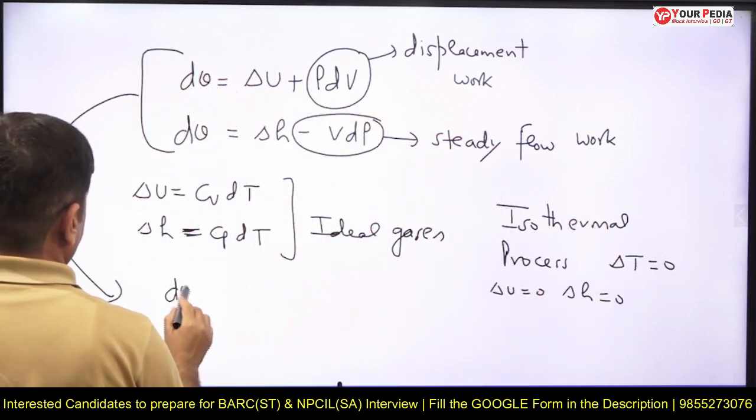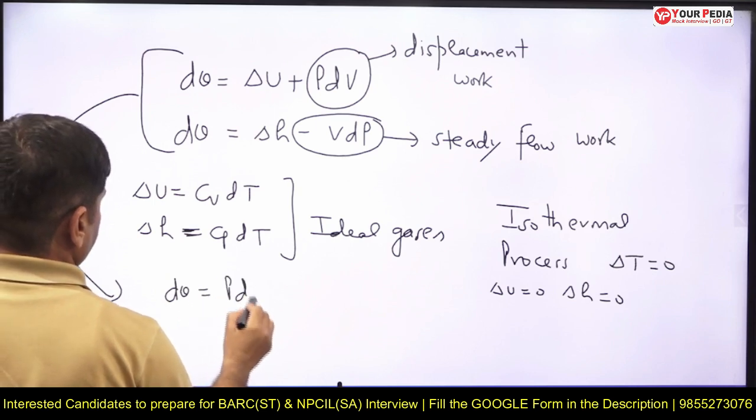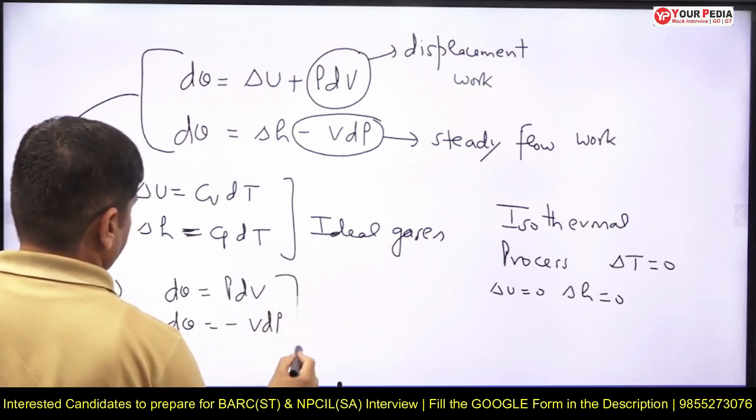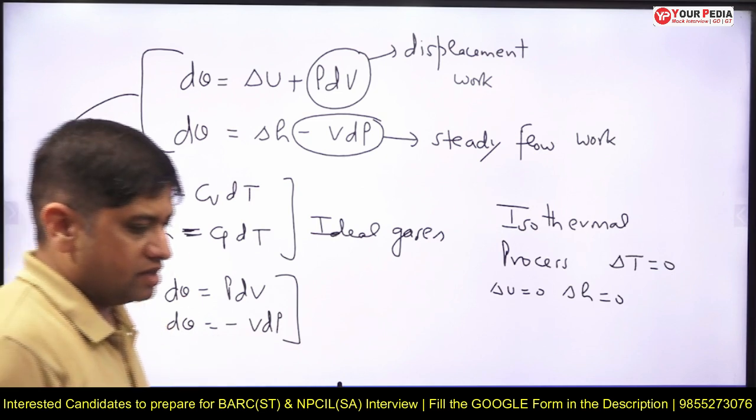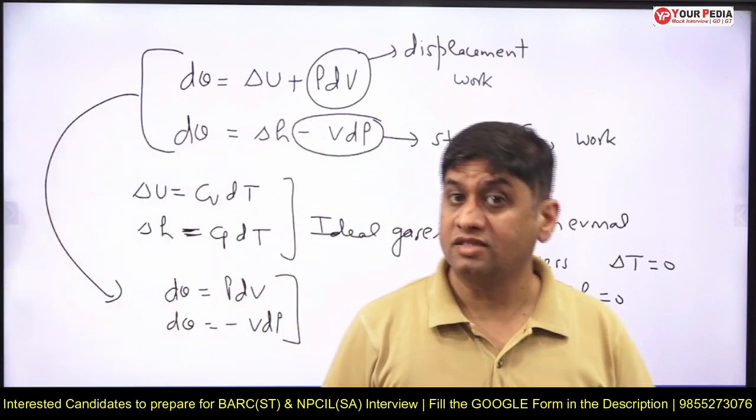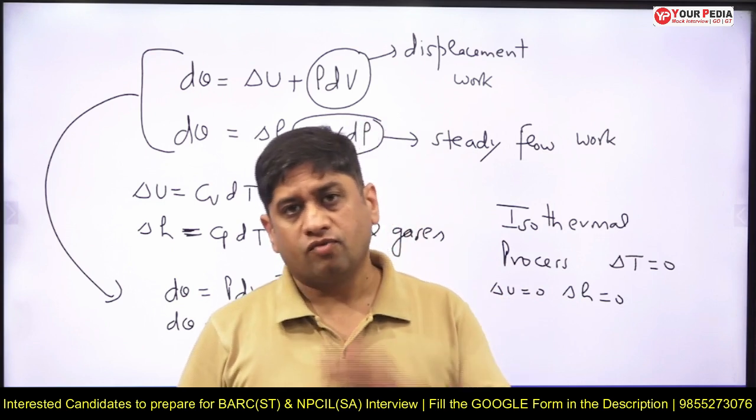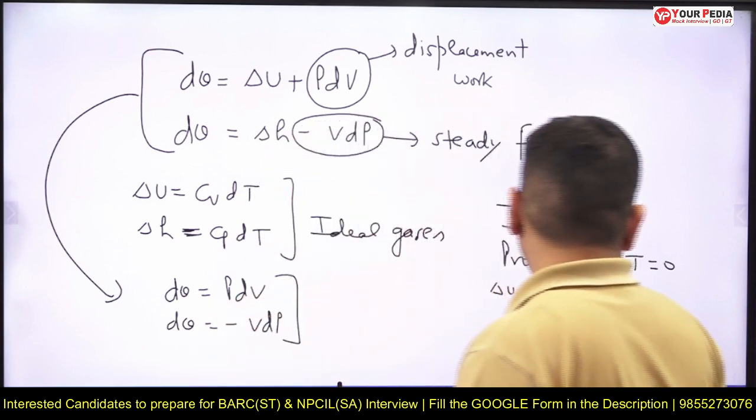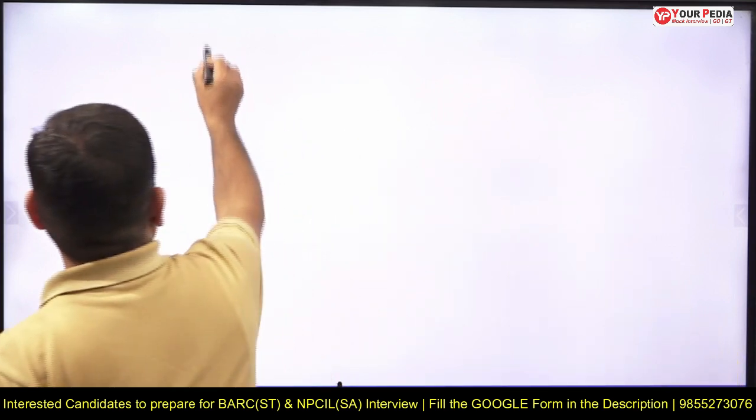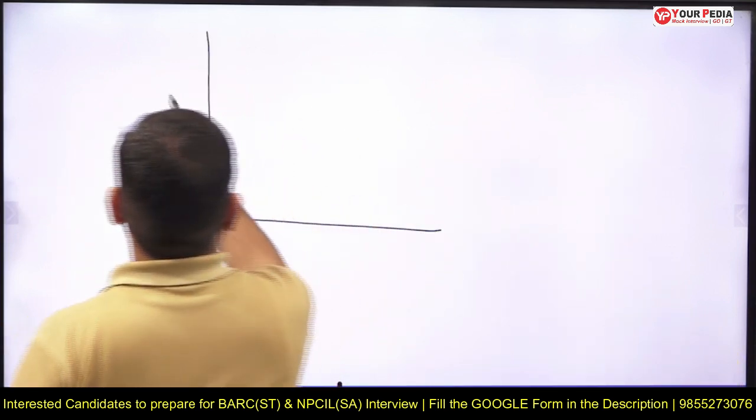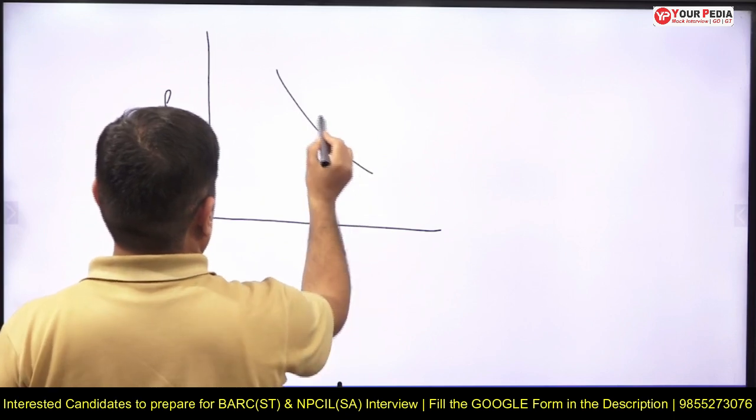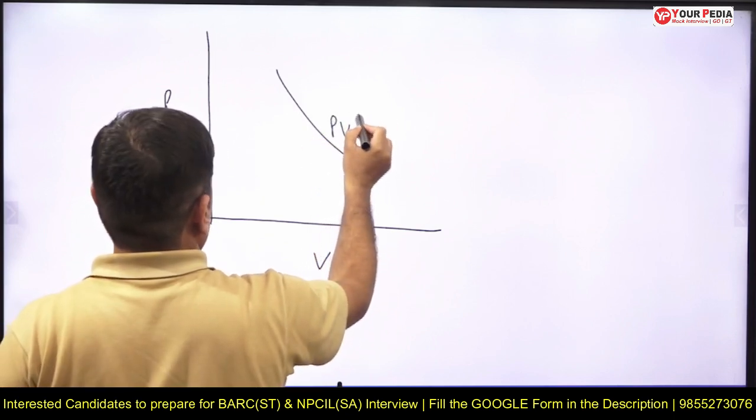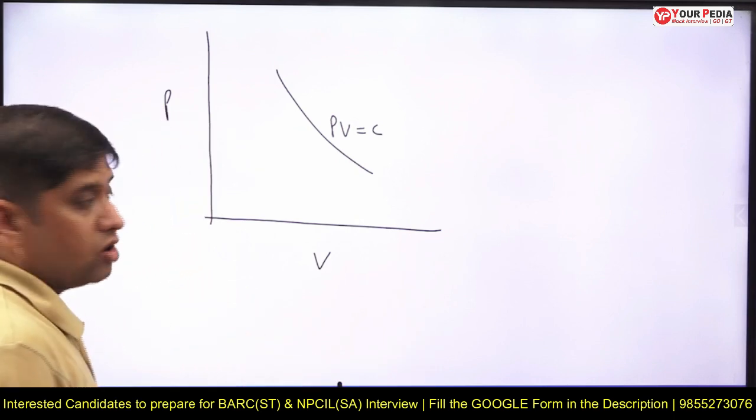If I write these two equations for isothermal process, I get dQ equals PdV and dQ equals minus VdP. If you compare these two, left hand side is same and hence right hand side will also be same. And hence for isothermal process, PdV work and minus VdP work is going to be same. How do you draw the isothermal process? This is PV raised to power one equals constant, or this is the isothermal process.